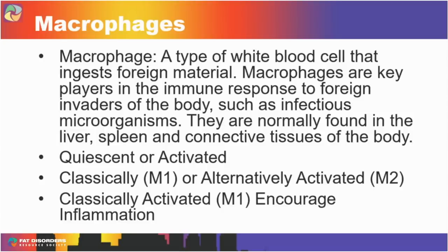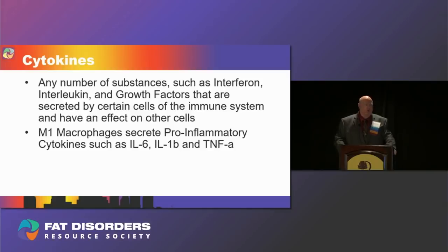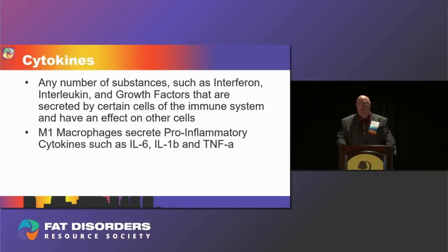Macrophages can exist in two states: a quiescent or resting state, and an activated state. Among the activated macrophages there are two classifications: the classically activated or M1 macrophage, and the alternatively activated or M2 macrophage. It's the classically activated M1 macrophages that promote and encourage inflammation — I'll be referring to these as the MACs. These MACs secrete pro-inflammatory cytokines such as interleukin-6, interleukin-1 beta, and tumor necrosis factor alpha.